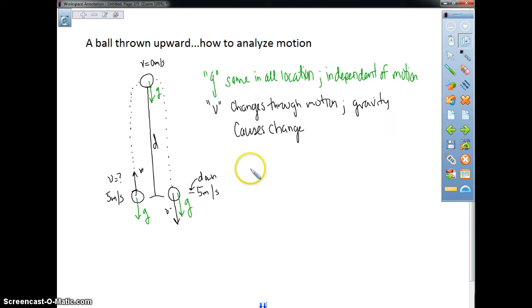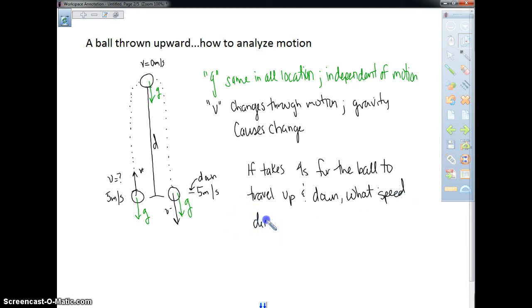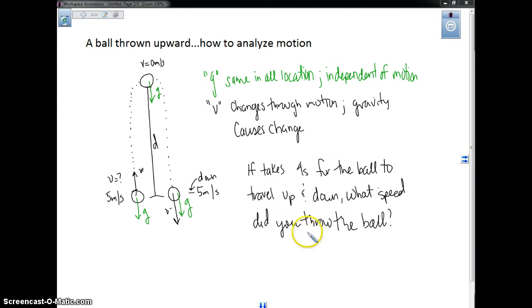The question was phrased something like this: if it takes four seconds for the ball to travel up and down, what speed did you throw the ball? First of all, anytime I see thrown or free fall, this keyword right here, I know I have to use free fall equations. I know I need to find speed, so I need to find V in free fall.